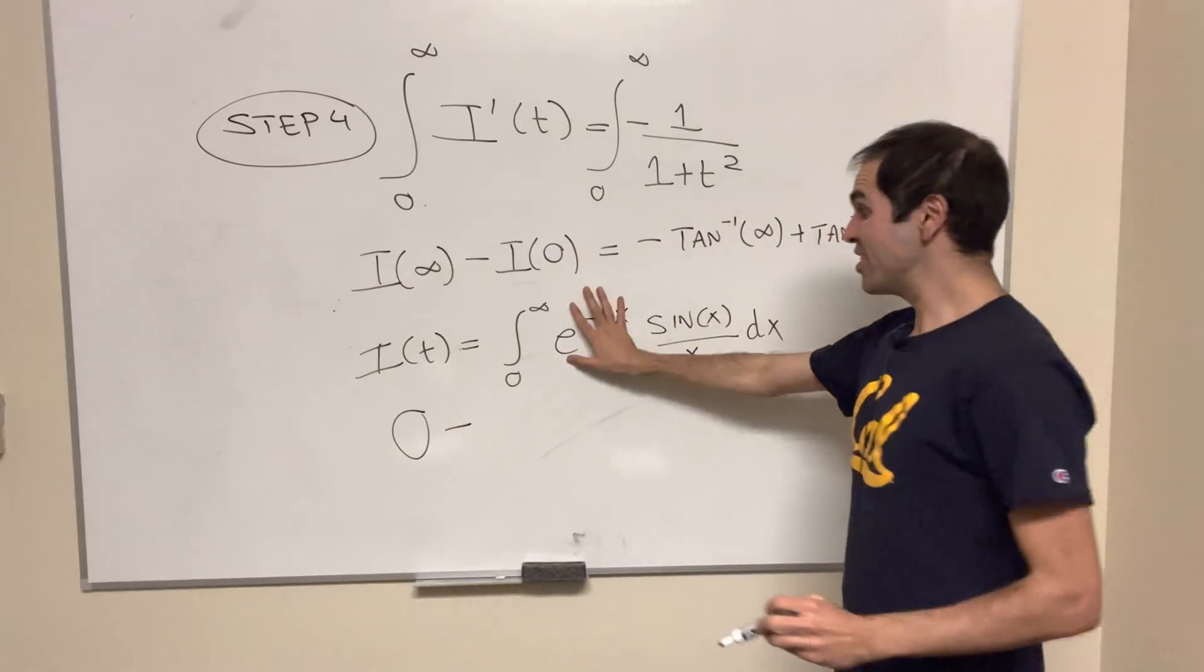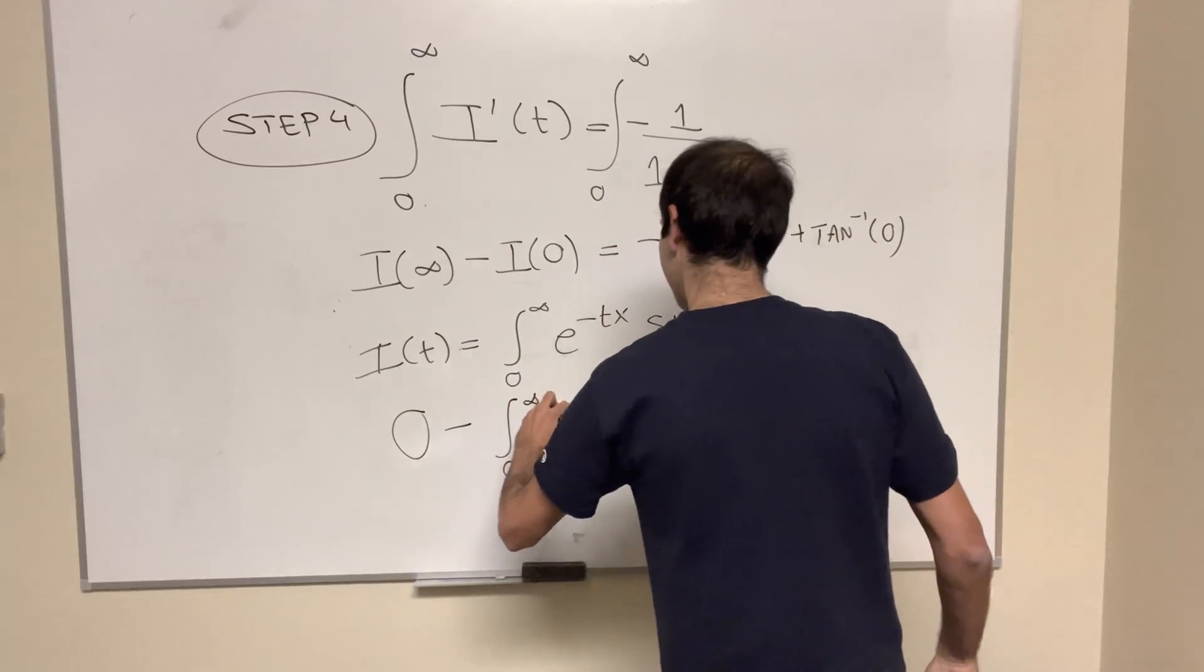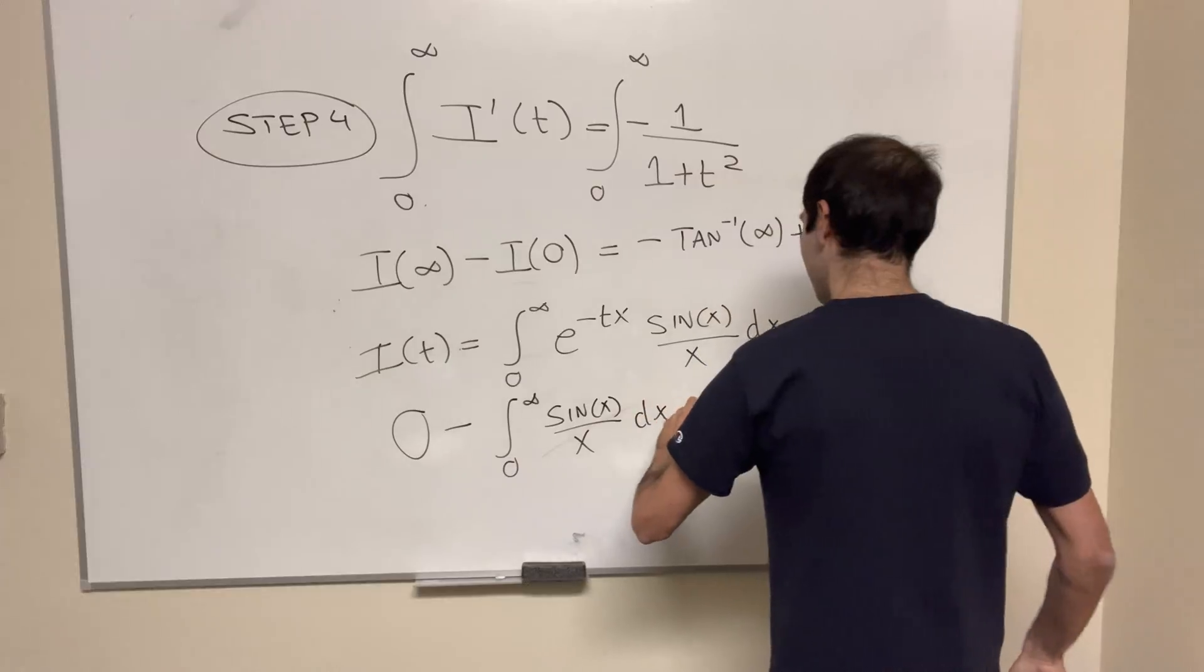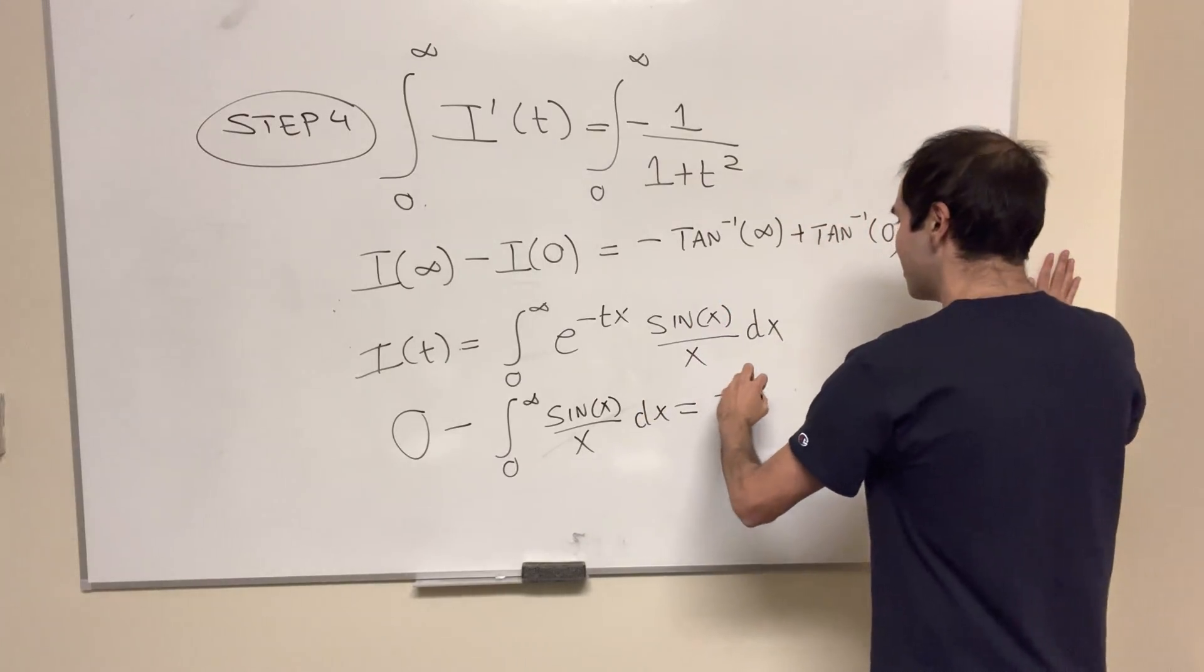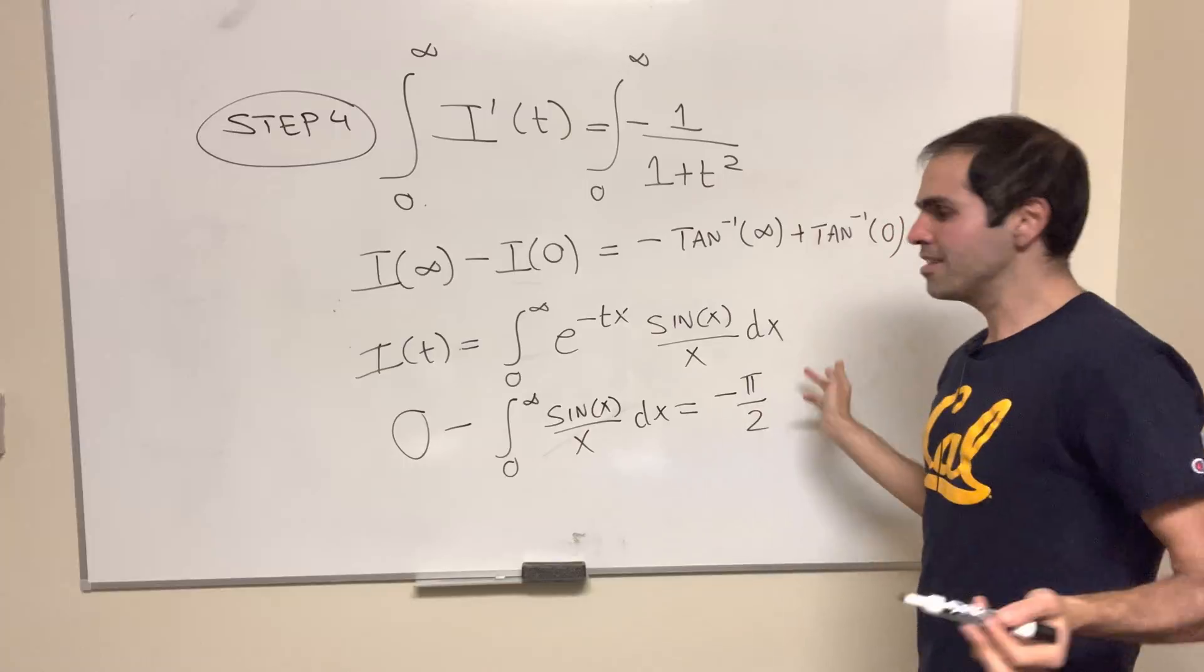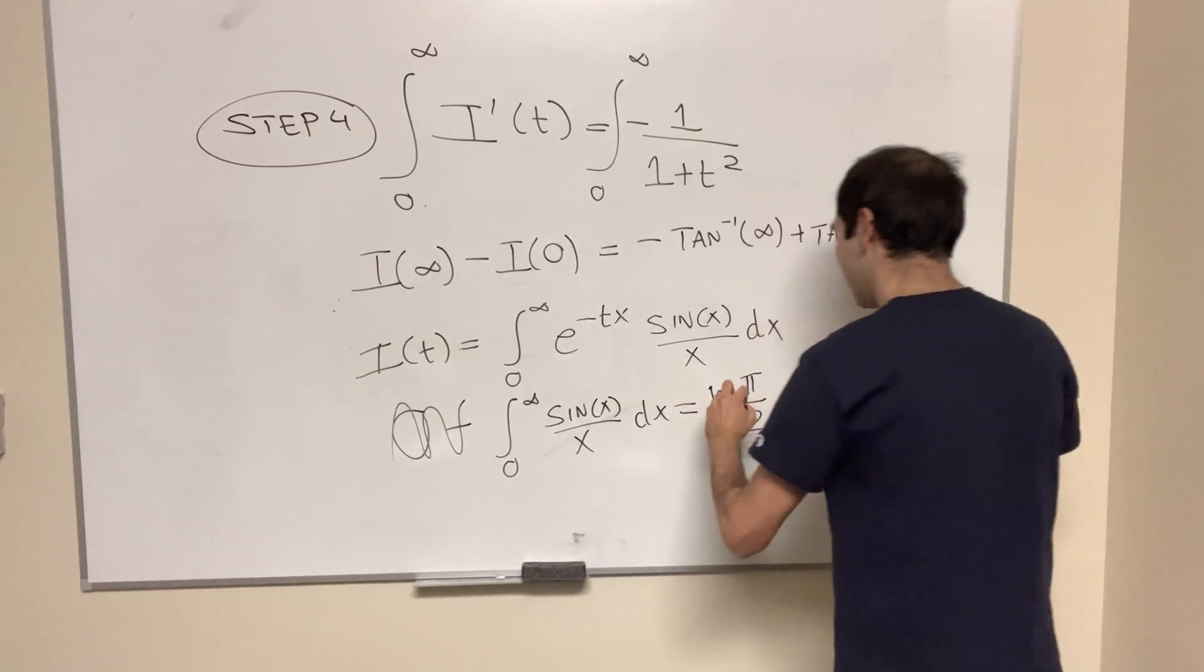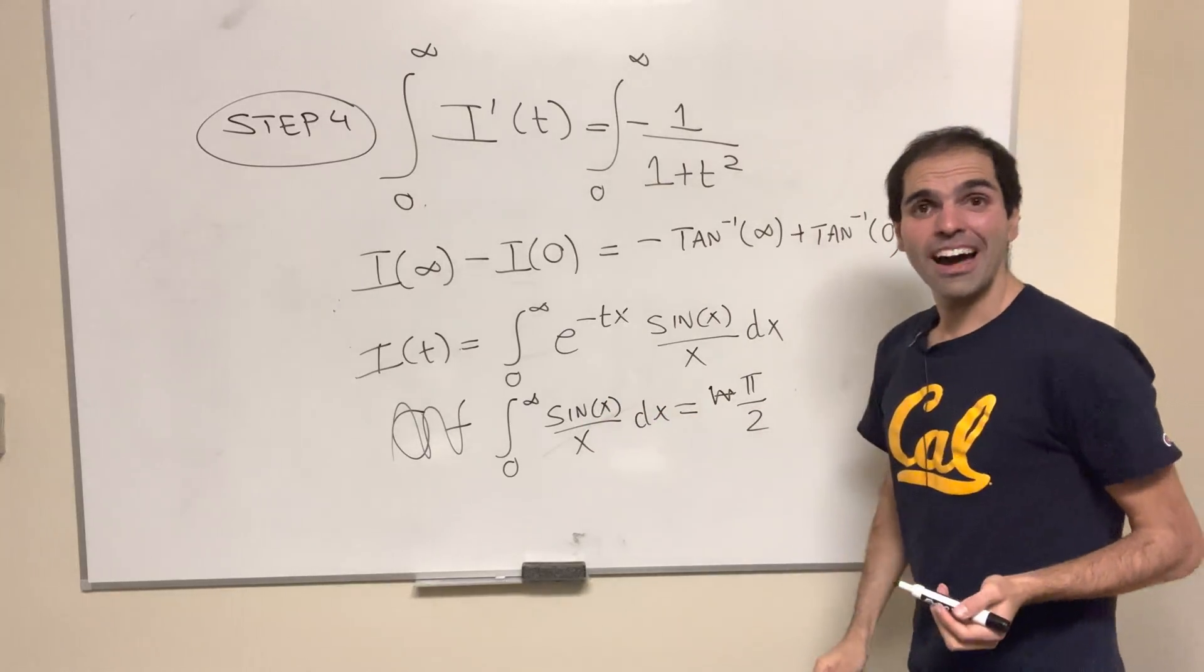i(0) is what we want, the Fresnel integral, from 0 to infinity, sin(x)/x dx, and finally, -arctan(∞), that's -π/2, arctan(0) is 0, and so we get our answer is -π/2, and so with some scribbles, we finally get that our Fresnel integral is indeed π/2. Wow!